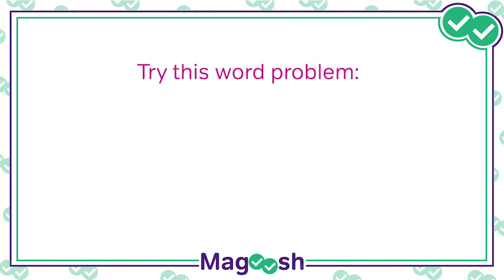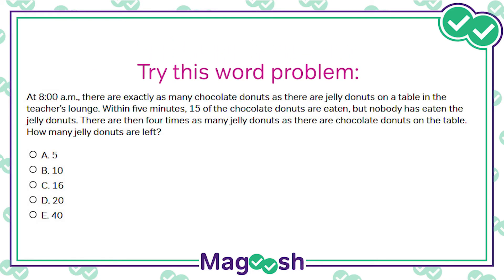Here is a relatively basic example. At 8am, there are exactly as many chocolate donuts as there are jelly donuts on a table in the teacher's lounge. Within 5 minutes, 15 of the chocolate donuts are eaten, but nobody has eaten the jelly donuts. There are then 4 times as many jelly donuts as there are chocolate donuts on the table. How many jelly donuts are left?